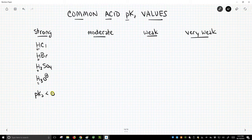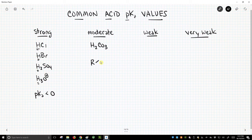Some are a little stronger, some a little weaker, but they're all categorized as strong acids. So what are the moderate acids? The moderate acids are things like carbonic acid, H2CO3. The carboxylic acids are moderate acids.